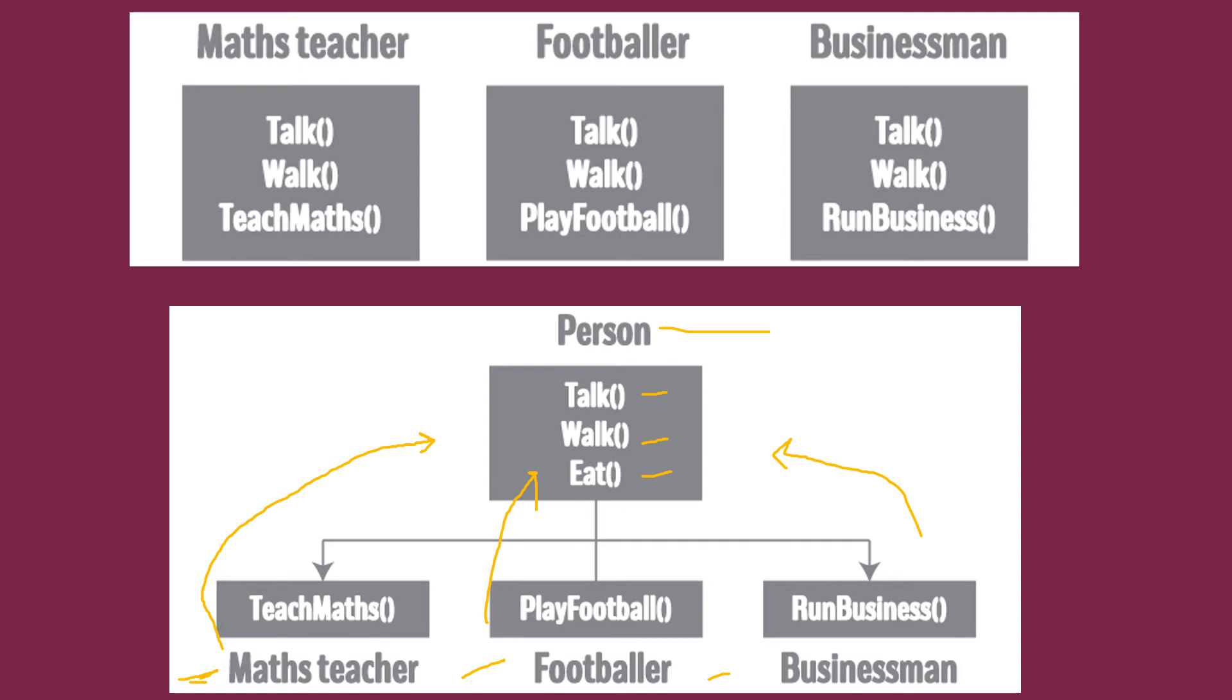However, you can add their special skills as a function in their respective classes like maths teacher can teach maths, footballer can play football and businessman can run a business. Inheritance helps you to create one base class as person in which all common characteristics of person can be added and can be used by all three different classes. So inheritance facilitates reusability.